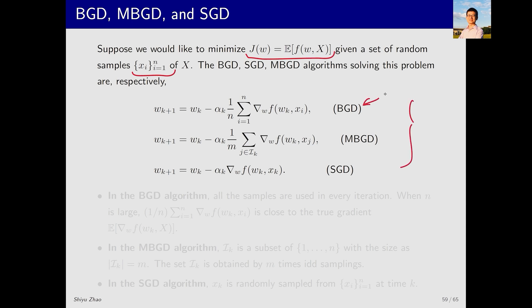BGD, where B stands for batch, MBGD (mini-batch gradient descent), and the previously discussed SGD. Let's see the differences between the three methods.